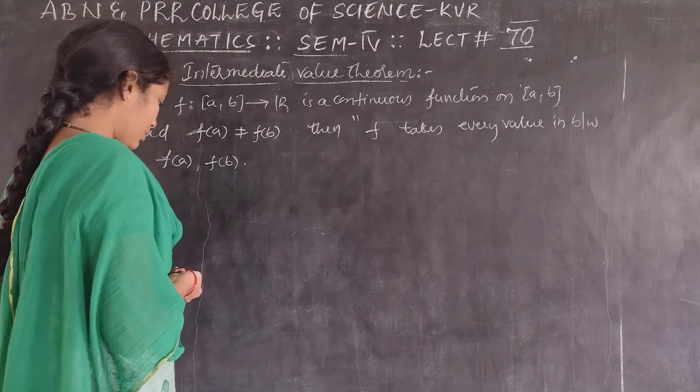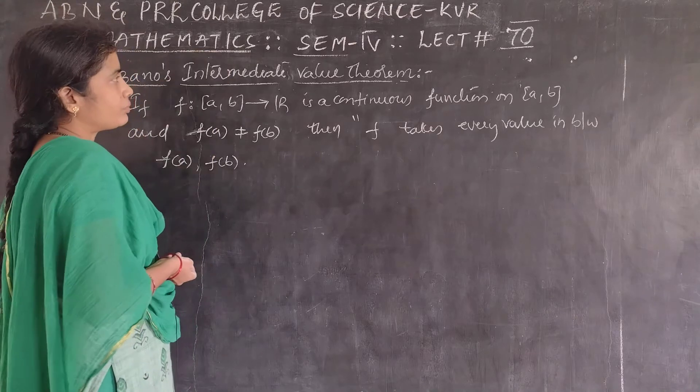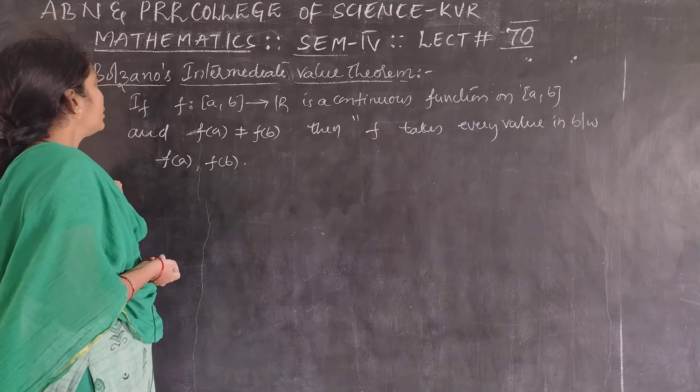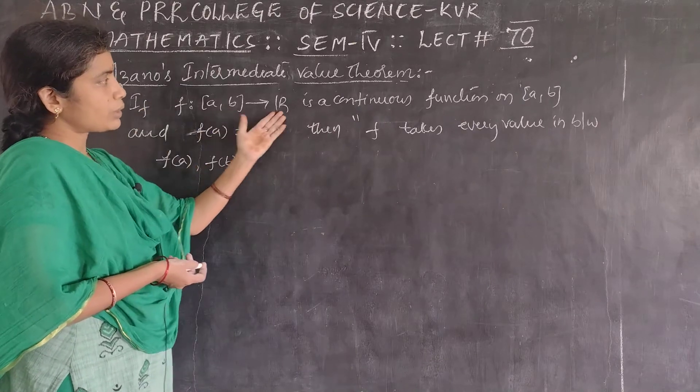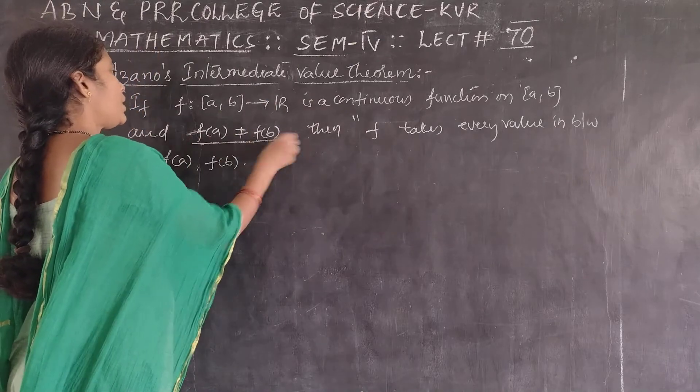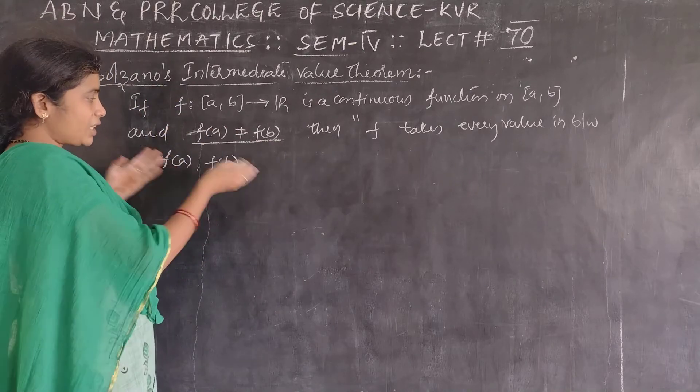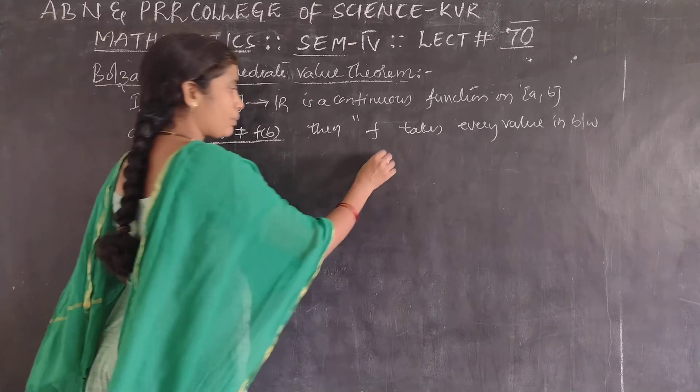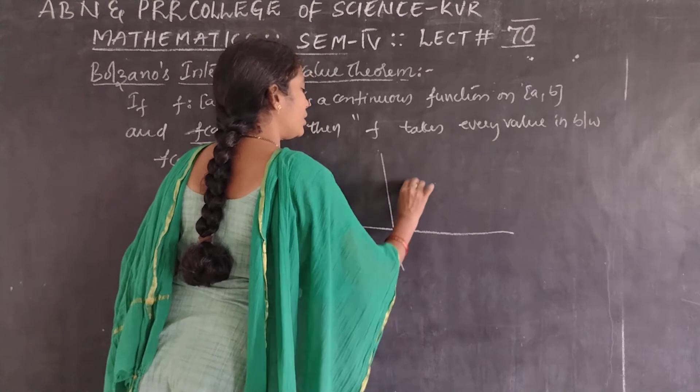What is this theorem? The theorem is Bolzano's Intermediate Value Theorem. The statement is: if function f from closed AB to R is continuous on closed AB and f of A not equal to f of B, then this theorem says that f takes every value in between f of A and f of B.